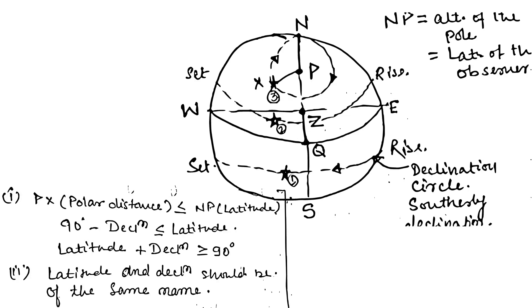Now, polar distance is equal to 90 degrees minus declination, and NP is equal to latitude. Which implies 90 degrees minus declination should be less than or equal to the latitude. If we put latitude on the other side, latitude plus declination should be greater than 90 degrees.